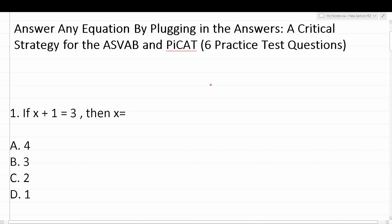The ASVAB and PiCat are multiple-choice tests, which means it really doesn't matter how you solve these questions — it just matters that you get the question correct. So if you can solve equations, great, go ahead and do so. But if you get stuck on a question that says solve for x or solve for some other variable, you can always plug in your answer choices and get the question correct 100% of the time.